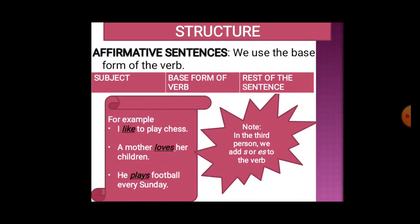Now let us see the structure. For affirmative or positive sentences, we use the base form or first form of verb. The structure is: subject, then base form of verb, then rest of the sentence. For example: I like to play chess; a mother loves her children; he plays football. We use the base form with first person, second person, or plural nouns, and add 's' or 'es' to verbs with singular third person subjects.